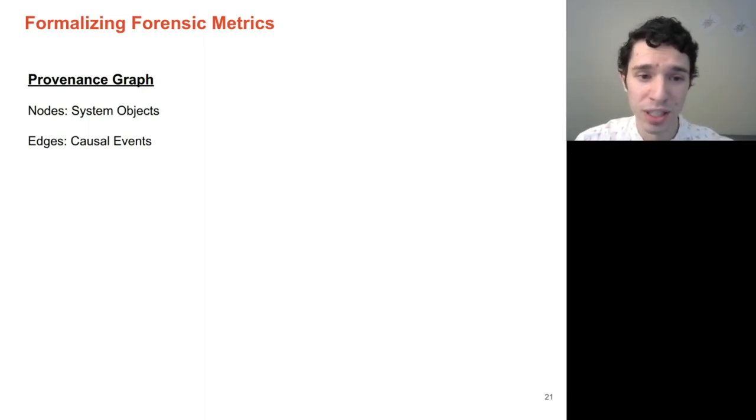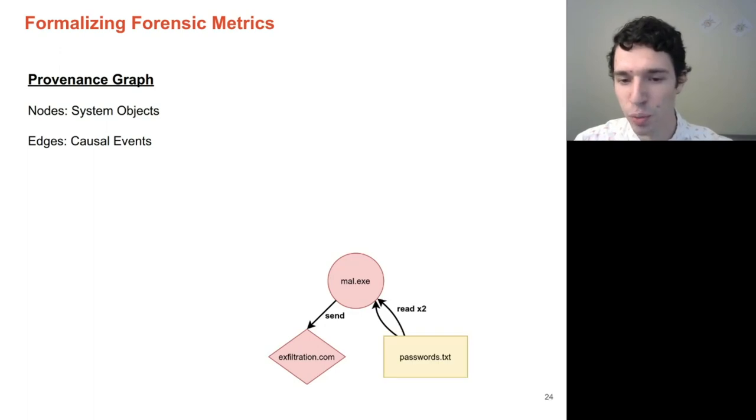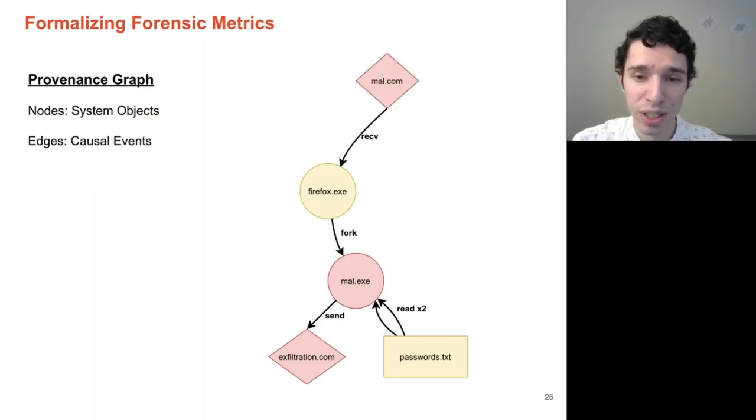So for instance, if an analyst was suspicious of an open socket, they could actually trace backwards up the provenance graph to determine which processes were involved in it, what data was sent, and ultimately the root cause of this malicious process. However, these malicious entities don't exist in isolation, but rather in a sea of benign events.